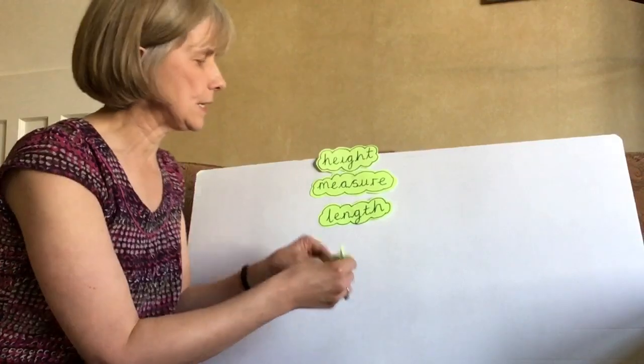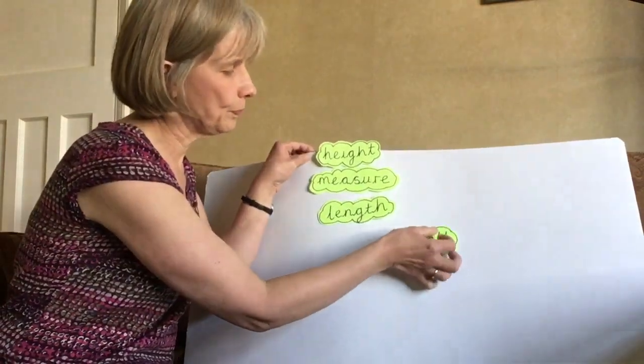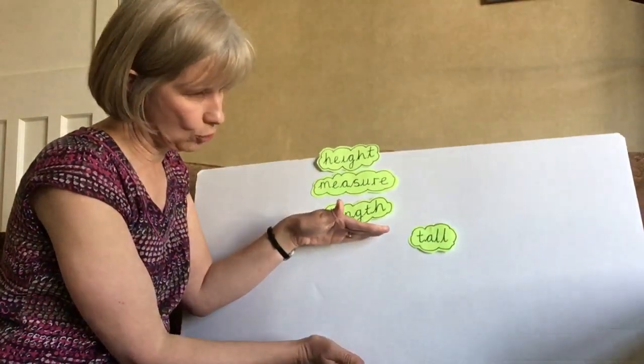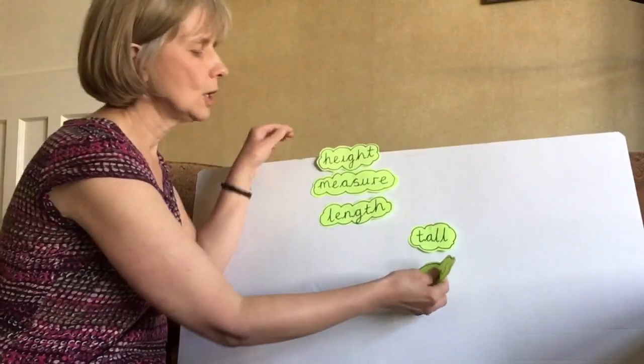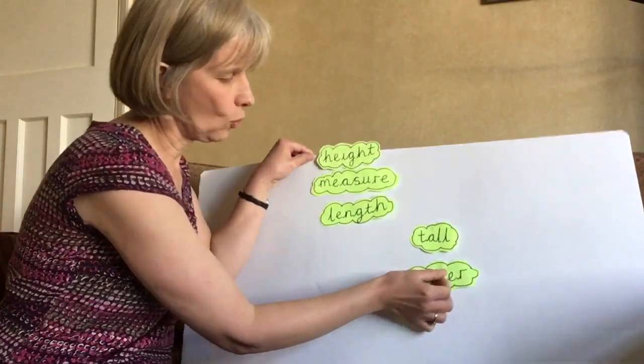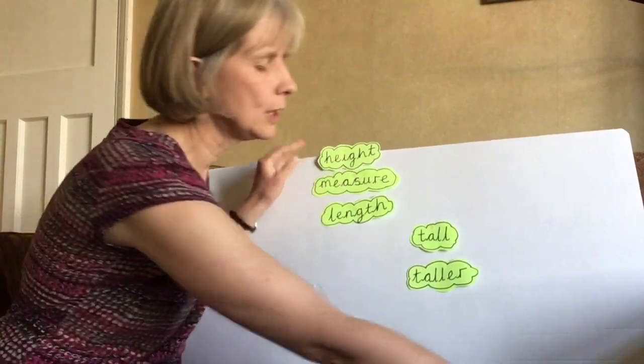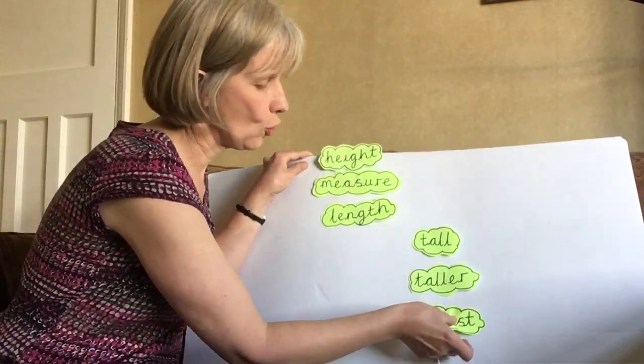Some other words that we need are tall. That's when we measure how tall, how high things are. Taller. One thing might be this tall, the next thing might be taller. And the word tallest.